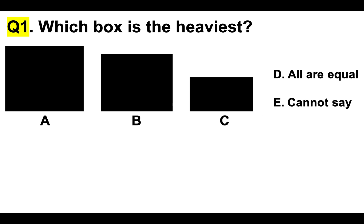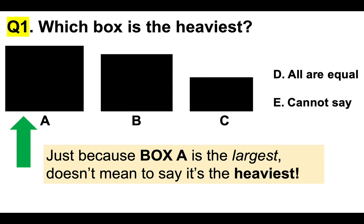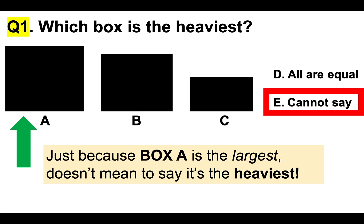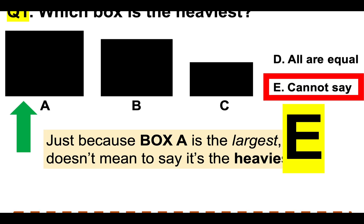A lot of people would put down A is the heaviest because it looks the largest box. But just because box A is the largest, it doesn't mean to say it's the heaviest. The truth is, we don't know which is the heaviest based on the image we have been provided with. So the answer can only be E — cannot say. Don't neglect the basic questions that appear to be really easy; you can still get caught out. The correct answer to question number one is E.